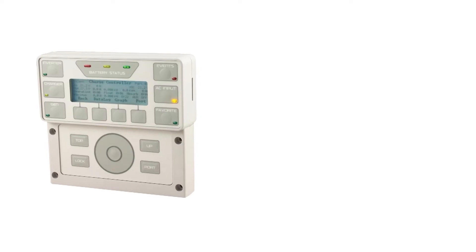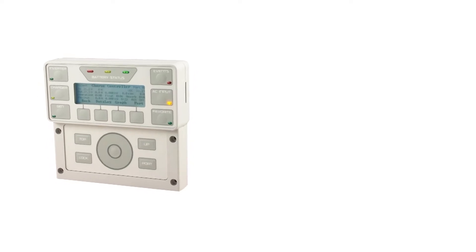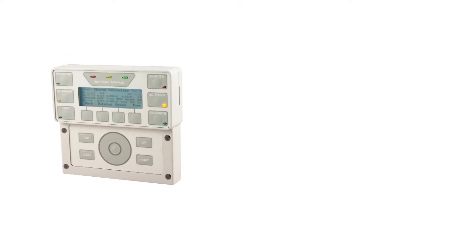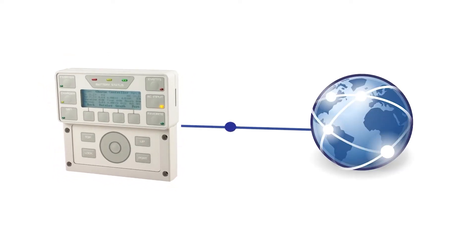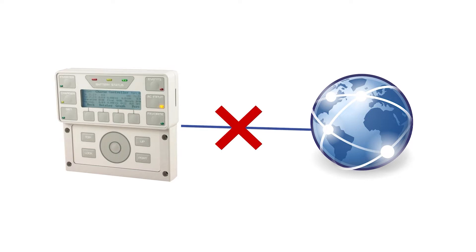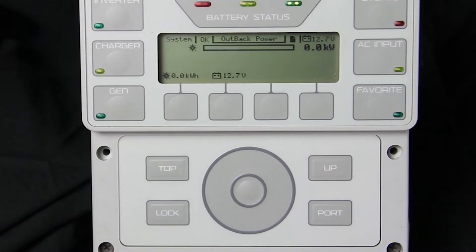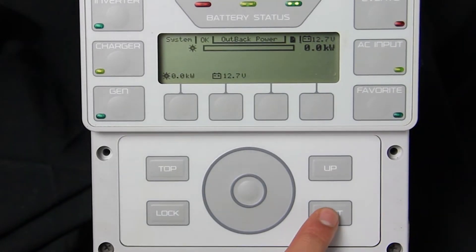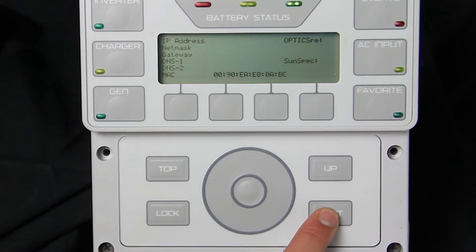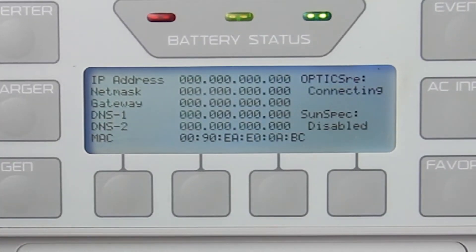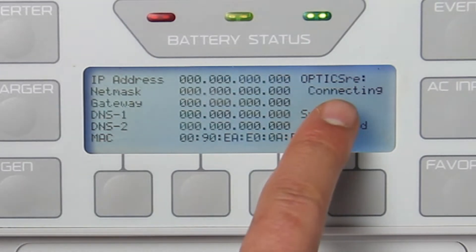In this tutorial we'll show you some basic steps to troubleshoot network connectivity with your Mate 3. First, we need to verify that we are unable to connect to OpticsRE. Click the port button, look under OpticsRE, and note the current network status.